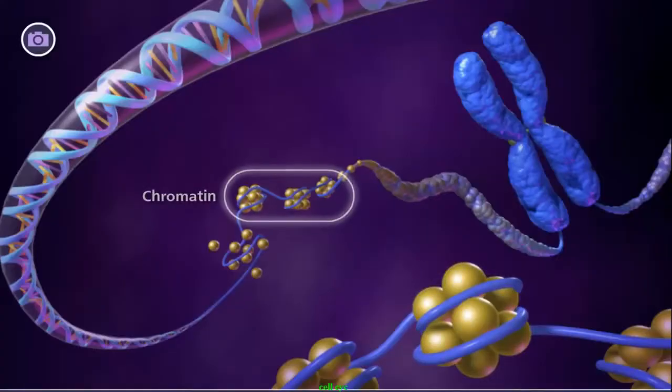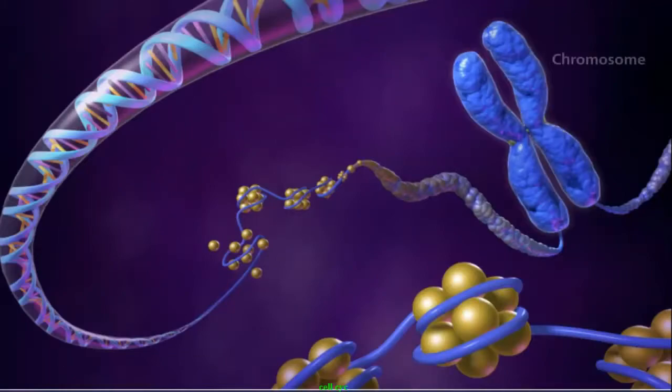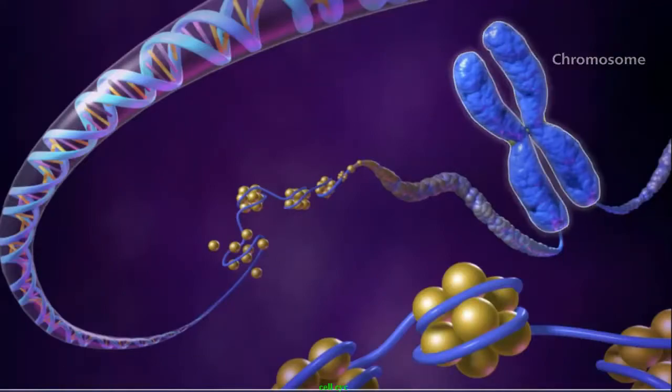As a cell prepares to divide, chromatin coils up further, shortening and condensing the chromosome. The replicated chromosomes are called sister chromatids.